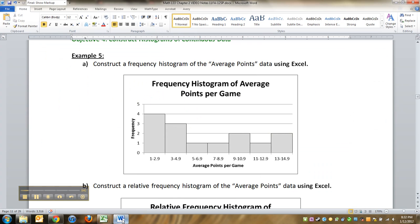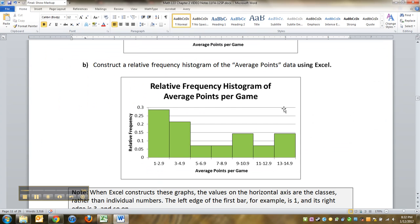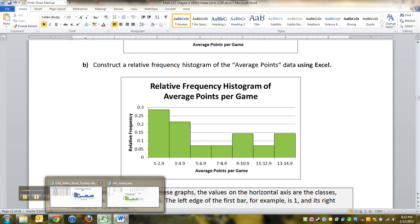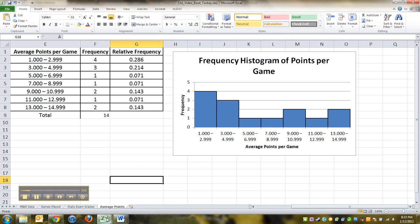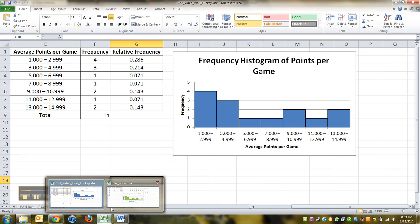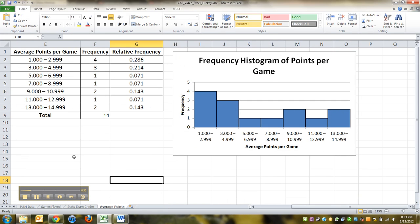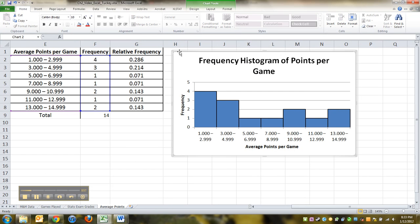All right. Now we also need to make a relative frequency histogram of the same data. So we can do this the long way or the short way. I mean, the long way would be to repeat what we just did. Oops, hold on one second. There we are. So we could repeat what we just did.